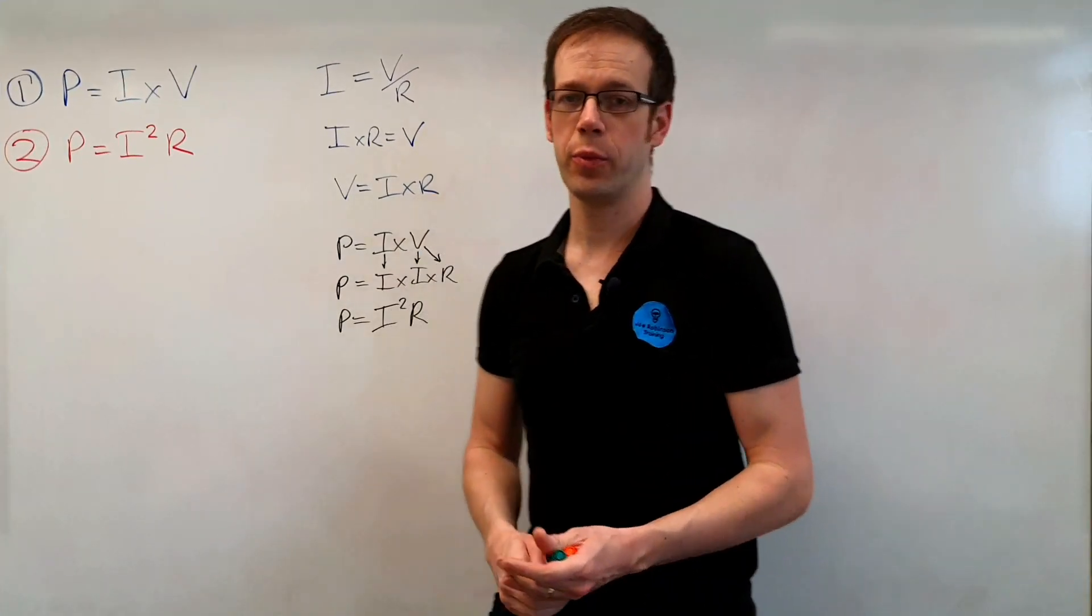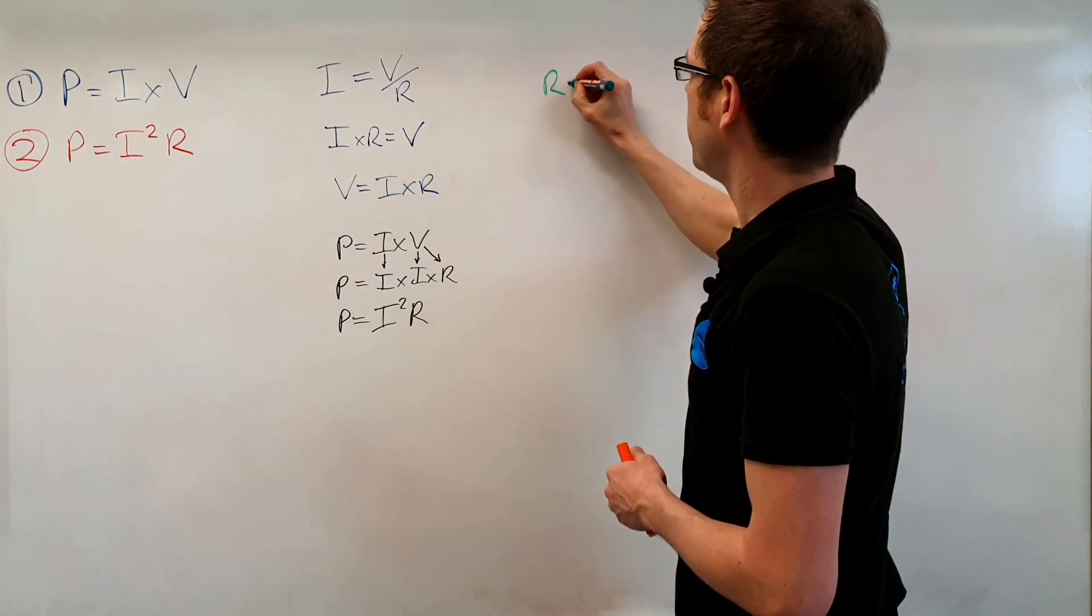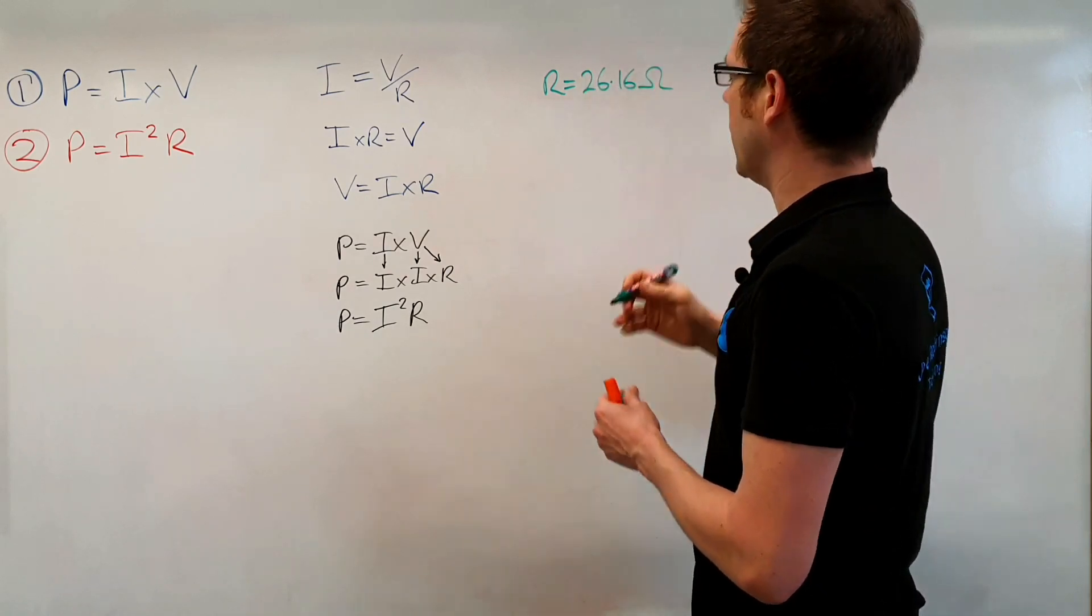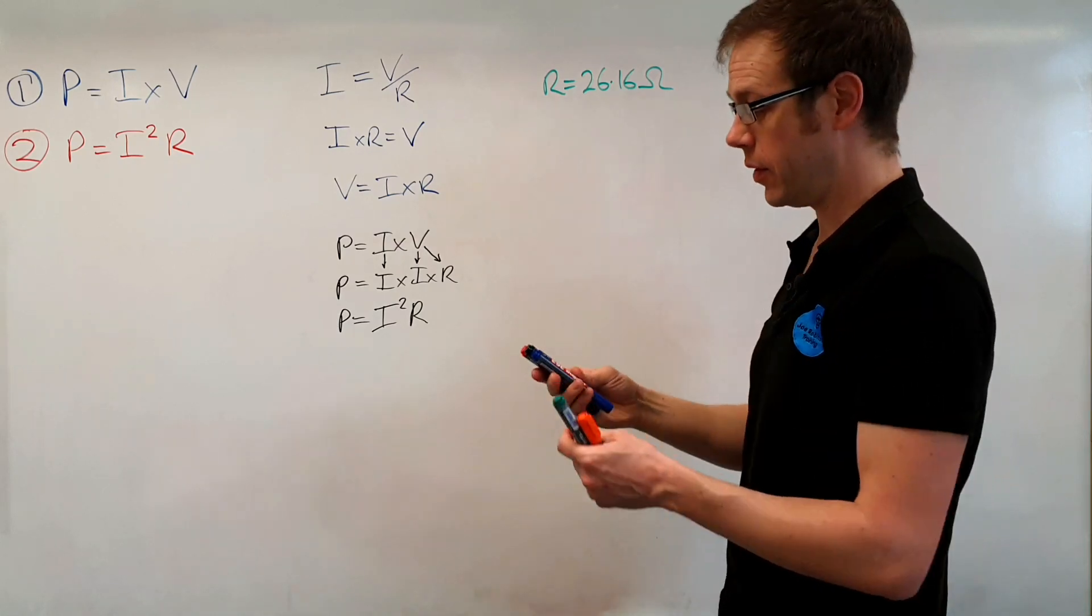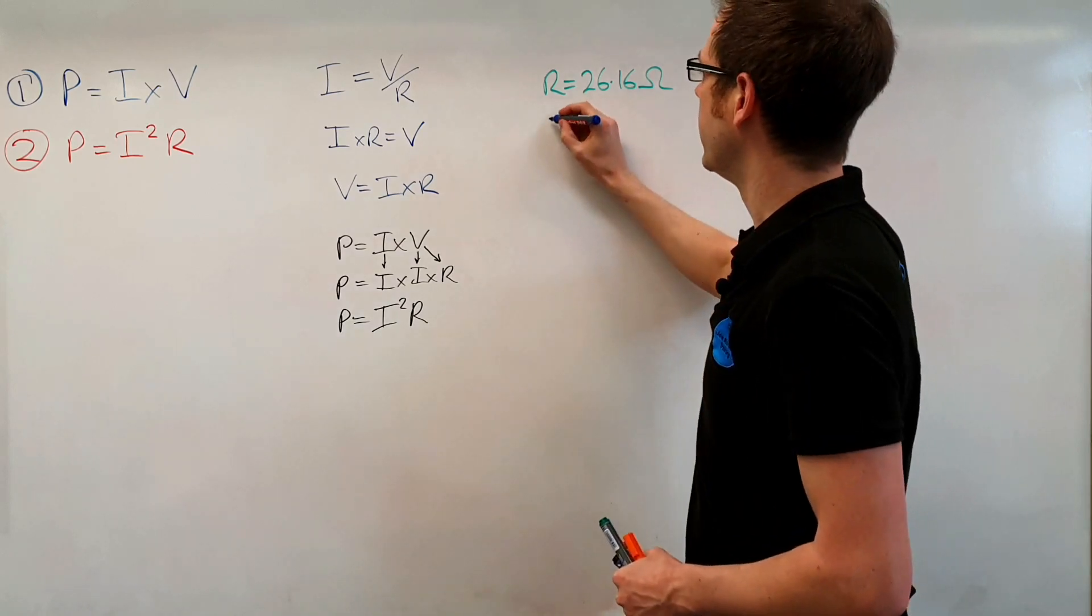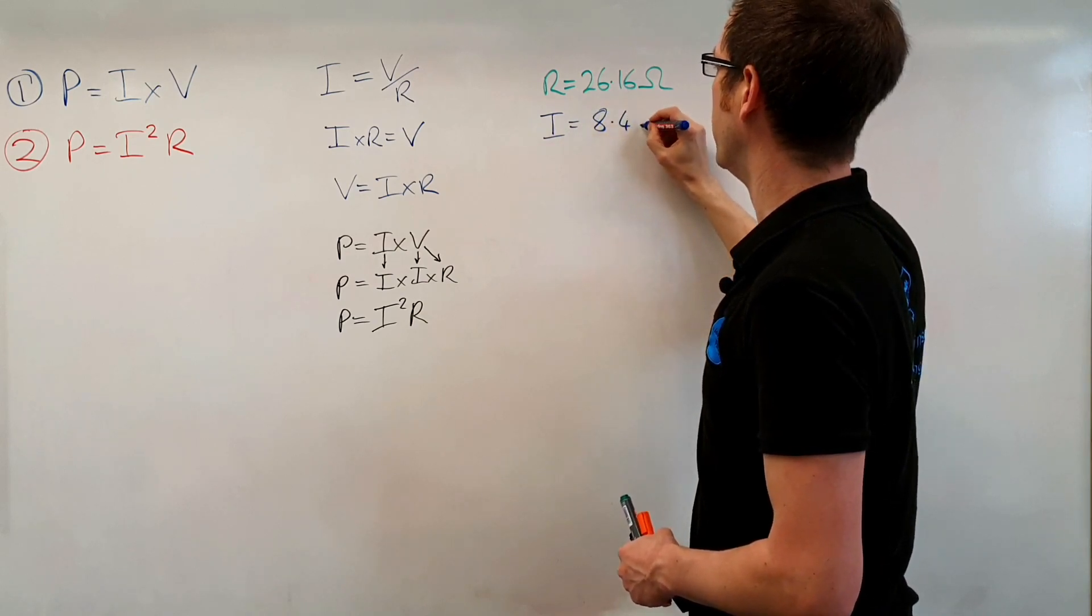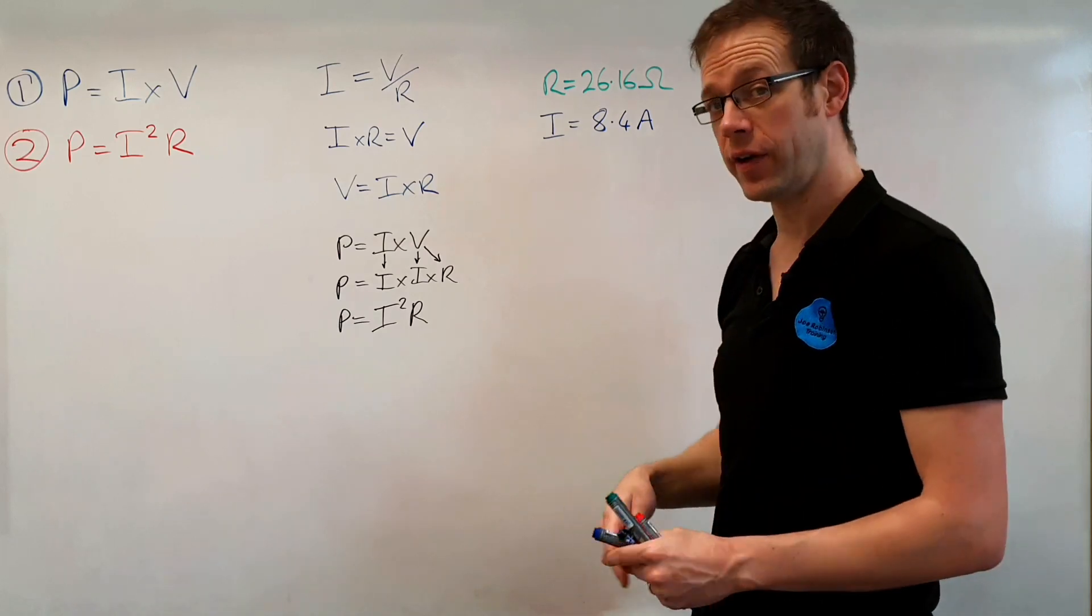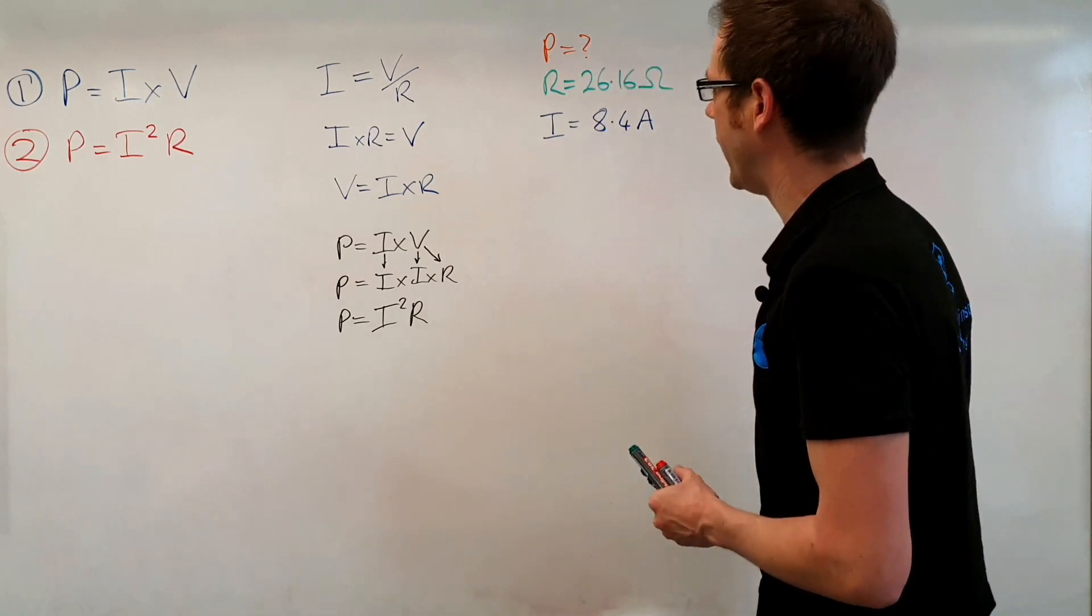So down in the workshop we saw that our heater had an internal resistance R was equal to 26.16 ohms. And we also saw that the current that was flowing through that heater, and we're taking this value from the previous video where we did this test. In the previous video the current flowing into the heater had a value of 8.4 amperes. So 8.4 amperes. And bear in mind that what we're trying to find in all of this is our value for power. We're trying to figure out what the power is in this question.